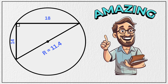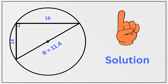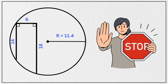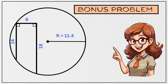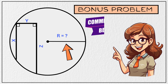Amazing, isn't it? Four powerful theorems coming together for one beautifully satisfying solution. But wait — here's a bonus problem for you. Can you find the radius of this circle in terms of x, y, and z instead of numbers? Drop your answer in the comments below. Let's see who can figure it out.